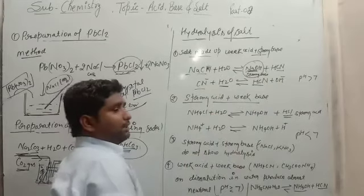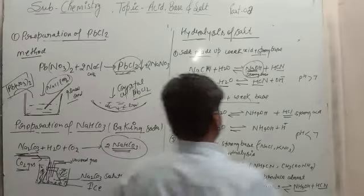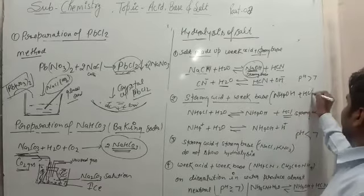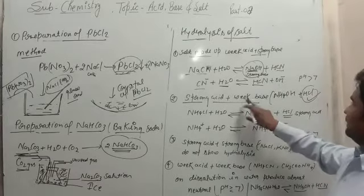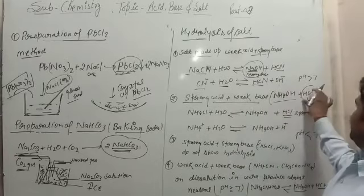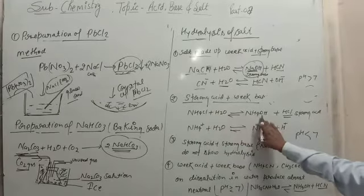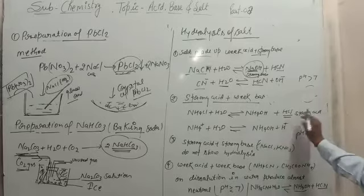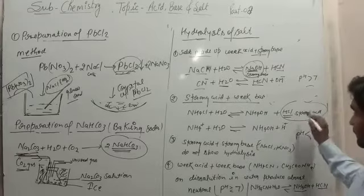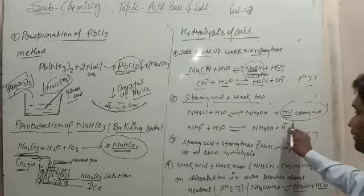Now next is the second type — strong acid and weak base. The salt NH₄Cl is made from NH₄OH and HCl. NH₄OH is the weak base. After the neutralization reaction we get NH₄Cl. When NH₄Cl undergoes hydrolysis, it gets converted into NH₄OH and HCl — a weak base and a strong acid. That is why this solution is acidic in nature, meaning the pH value of the solution is less than 7.